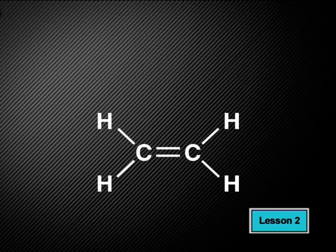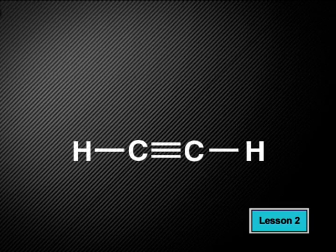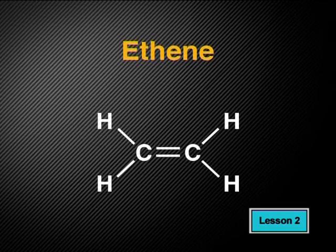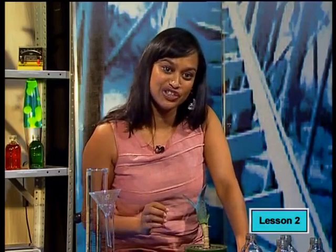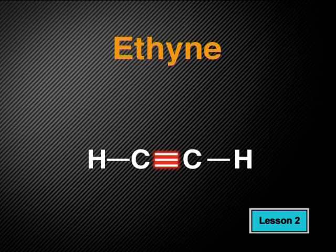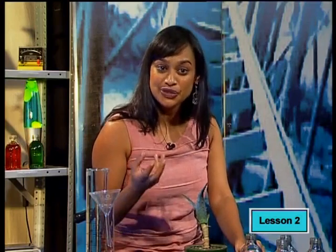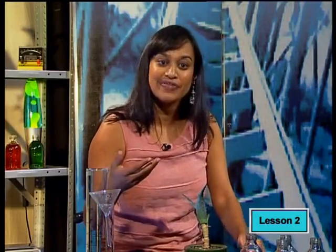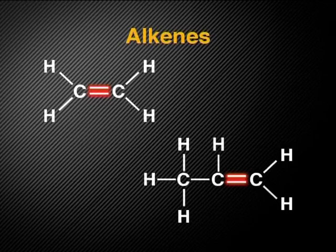Can you identify the functional group present in alkenes and alkynes? The special characteristic that makes ethene an unsaturated hydrocarbon is the double bond — all alkenes share this functional group. For alkynes, the functional group is a triple bond. The functional group gives us a way to identify the homologous group that a molecule belongs to, and also a way of naming the molecules belonging to that group. Today we will focus on groups of molecules in which there is always at least one double or triple bond, starting with naming molecules belonging to the alkenes.